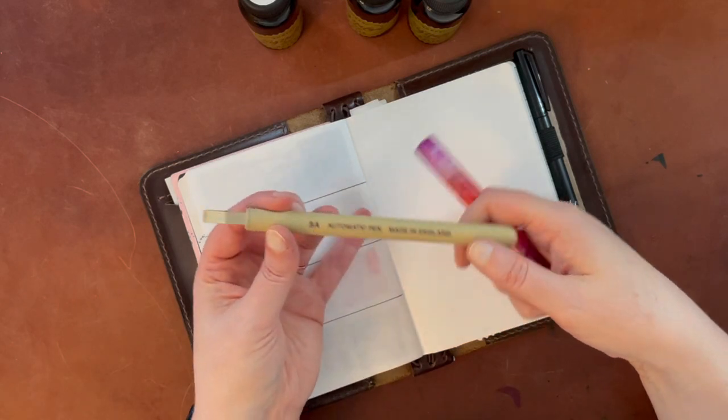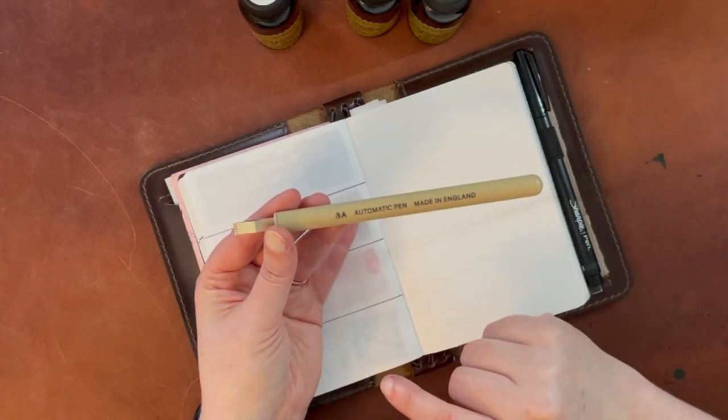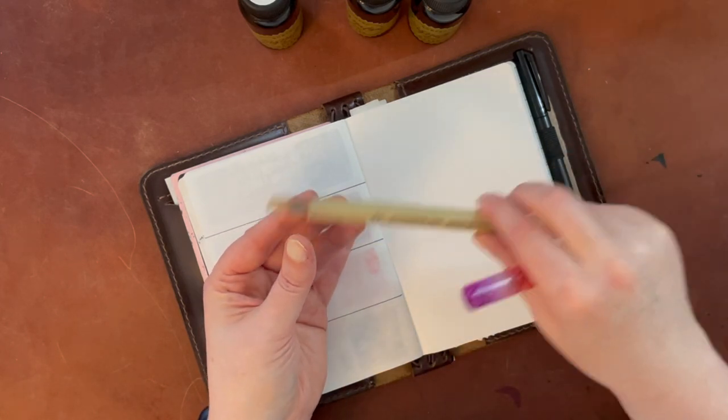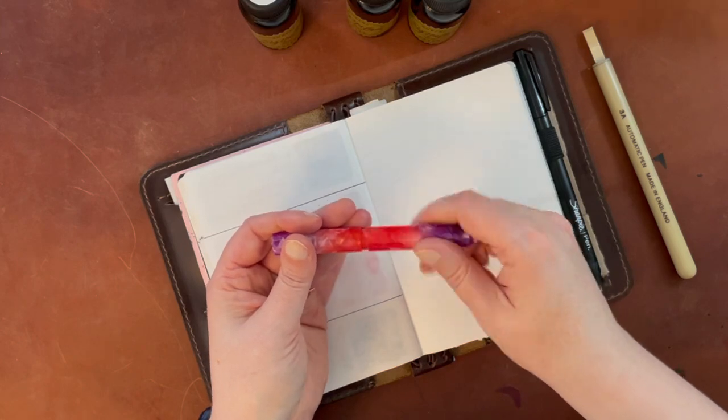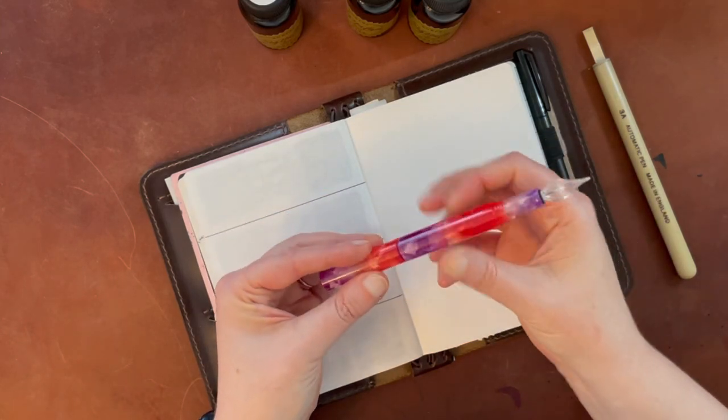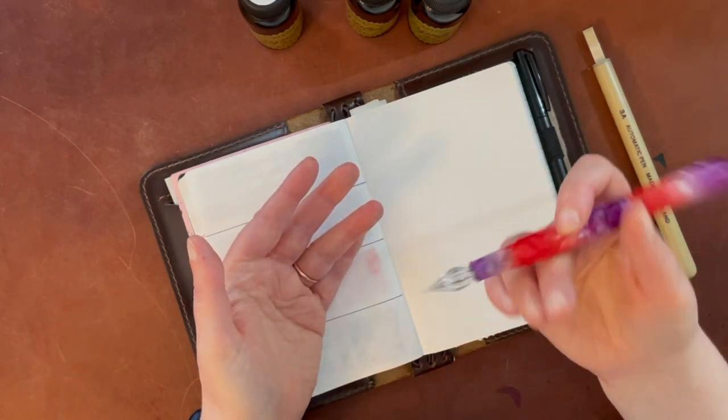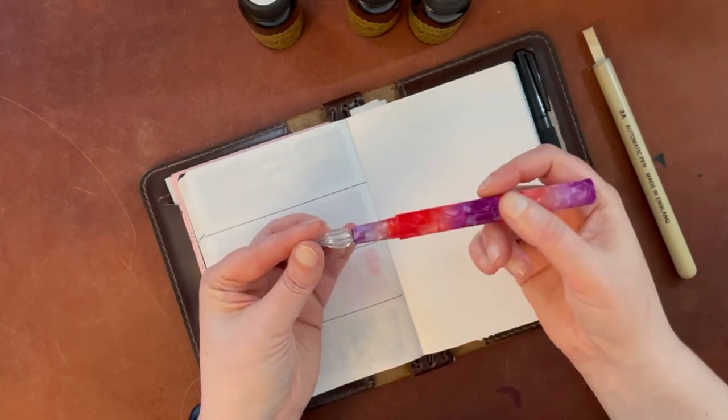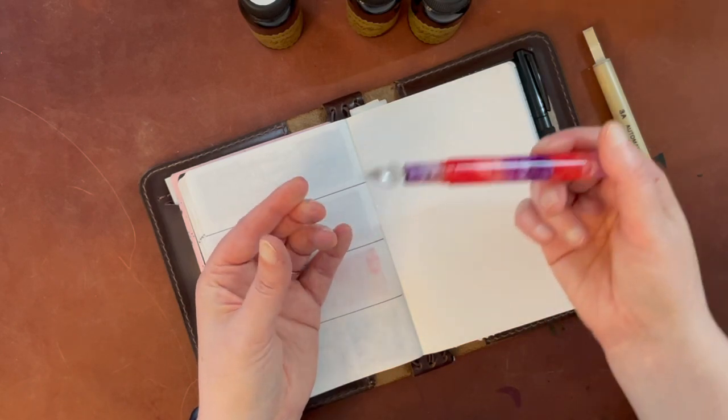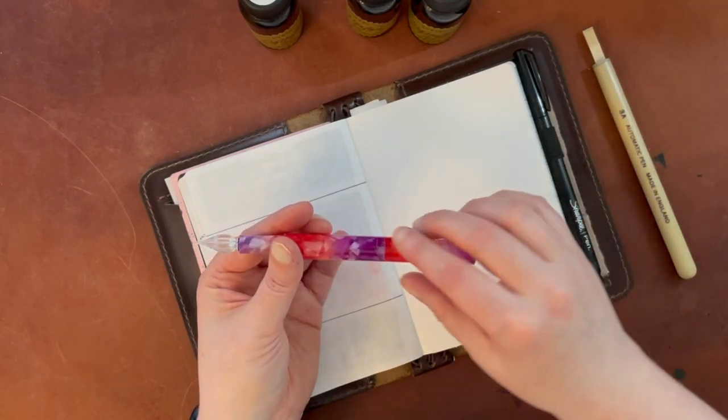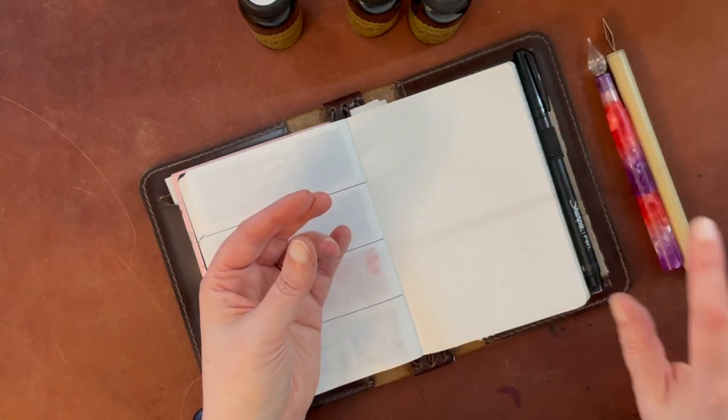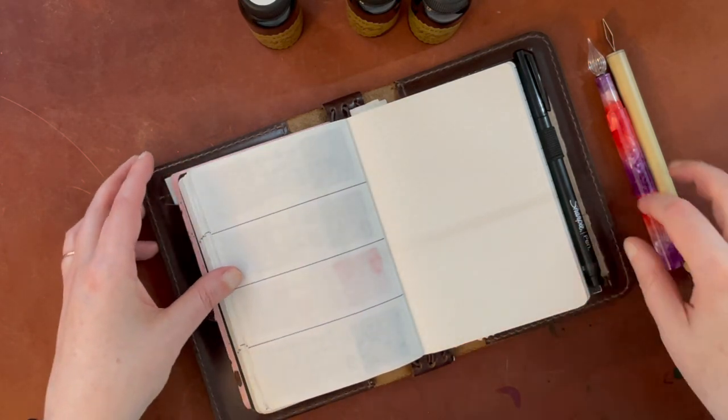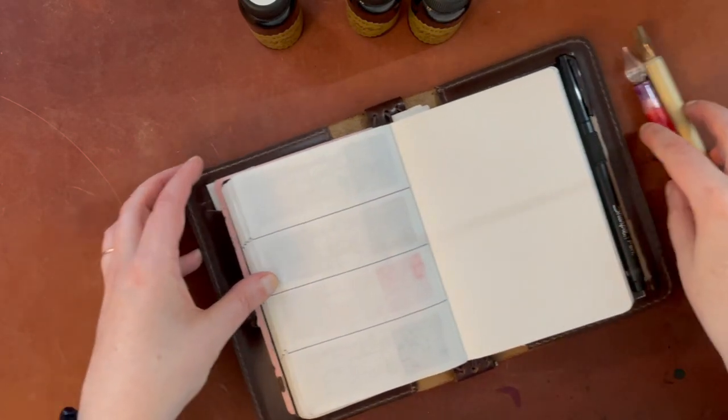The tools that I'm going to be using for this swatching is this automatic pen, which is a size 3A. The link is in that setup video. And then I also have this Moon Man glass dip pen. It's a little easier for me to use this because I can just get it out and not be so precious with it as my regular glass dip pen. I'll put a link to this as well. Off to the side, I have some water to rinse off my tools in between colors and a paper towel.